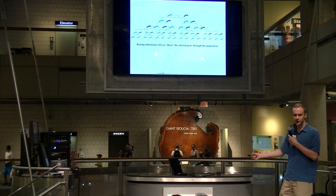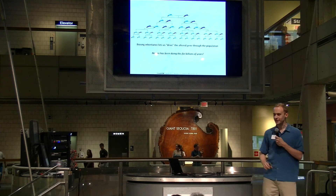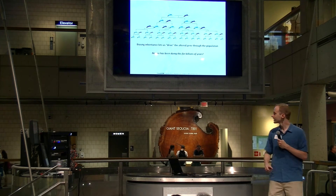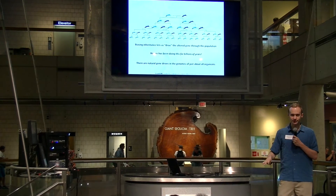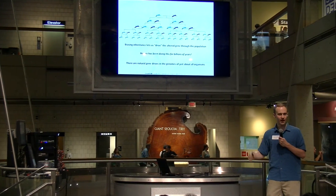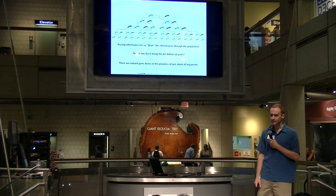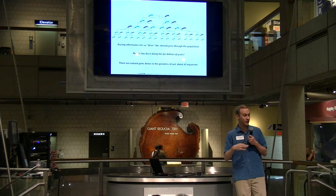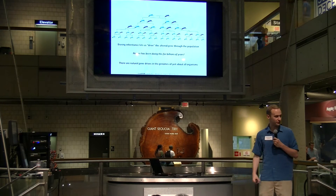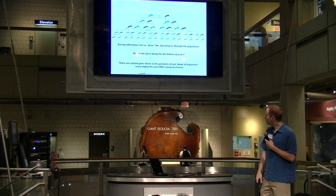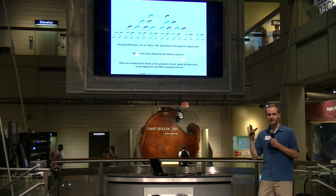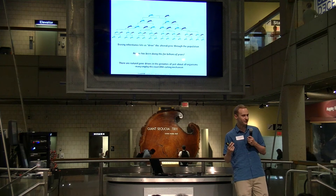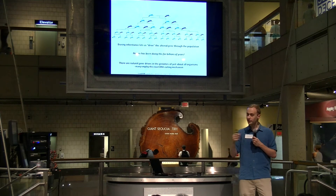You might think this is clever, but evolution was way ahead of us — nature has been biasing inheritance this way for literally billions of years. There are natural gene drives in the genomes of pretty much every organism on the planet, including ours. Arguably about a third of our genome is broken gene drives that reproduce by biasing inheritance, many employing this exact DNA cutting mechanism. We're just taking something nature already developed and harnessing it for our own purposes.